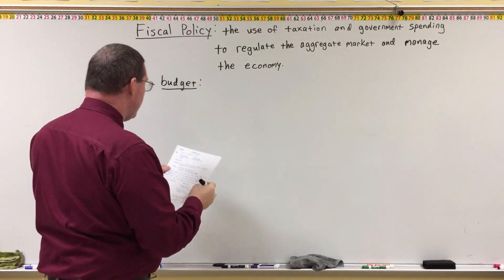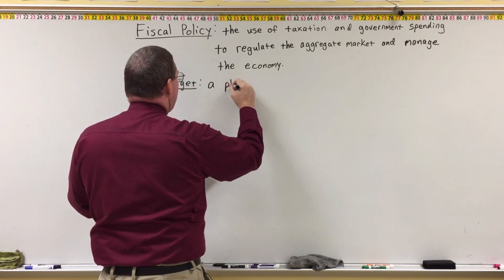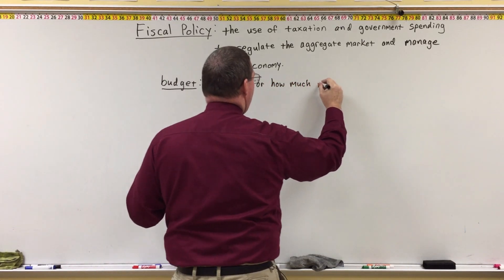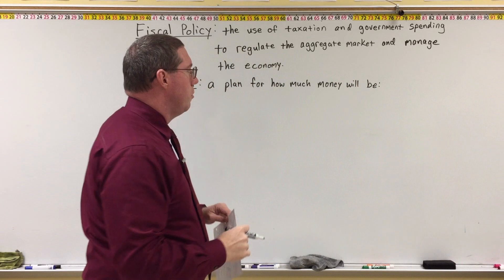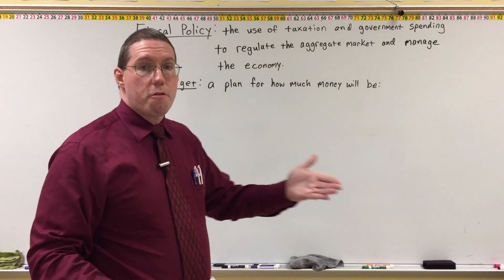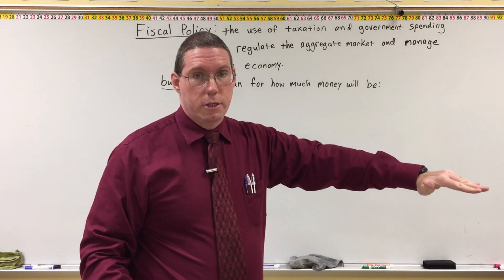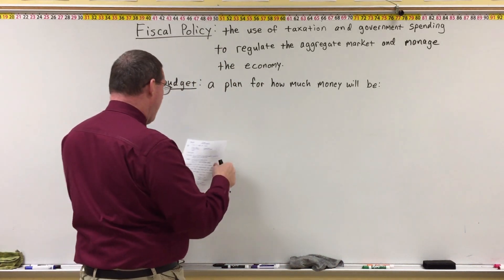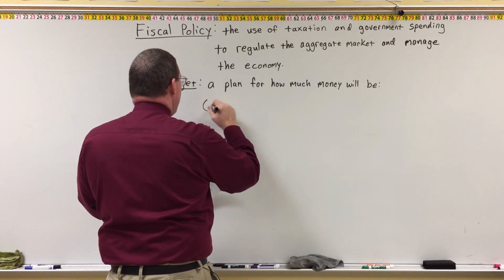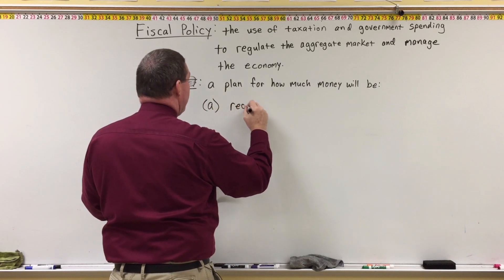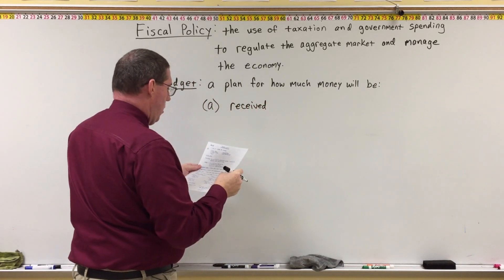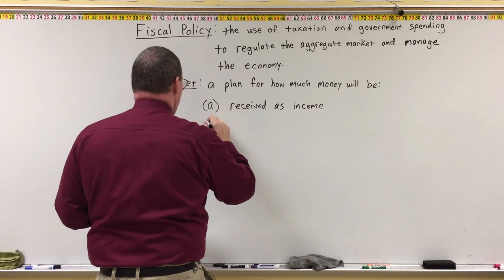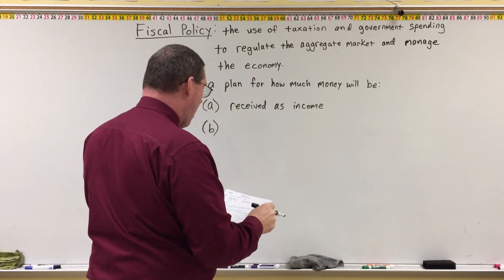What is a budget? A budget is a plan. It's a plan for how much money will be received as income and how much will be paid out as expenses. There are two things that affect our budget: money coming in and money going out — income and spending.